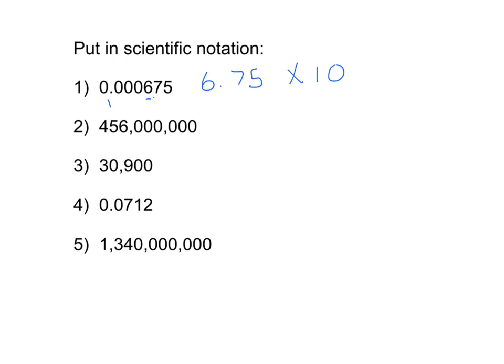So it starts right here and we're going to move it one, two, three, four places. We're moving the decimal to the right, so this is going to be a negative exponent. And remember, we want to multiply six point seven five by a small number in order to get a small number, so you know you're multiplying it by a negative exponent.